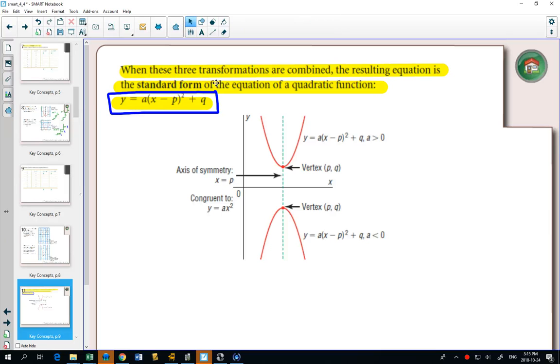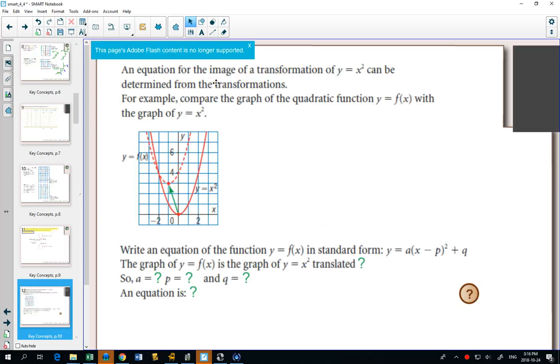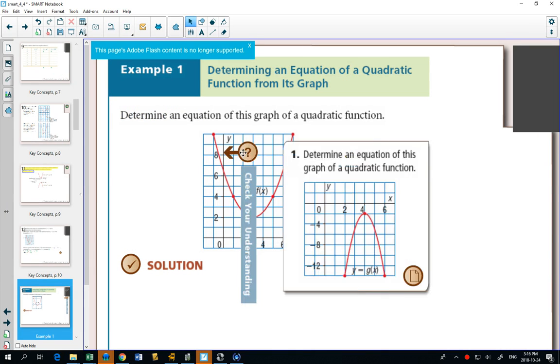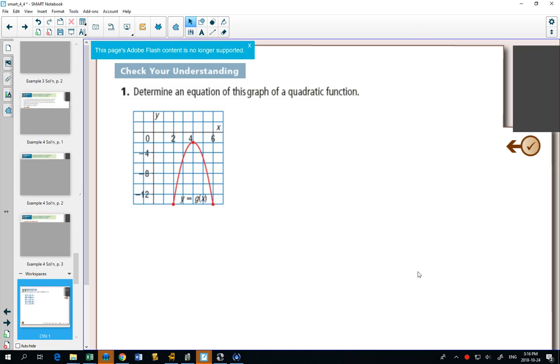So we can look at example one. They give us a graph and we need to come up with an equation for this graph. So the first thing we're going to see is can you tell me where the vertex is?